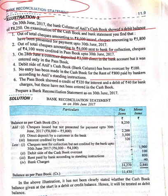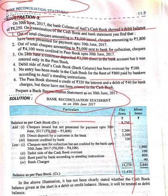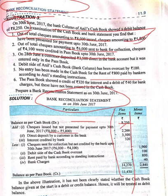Now we will write the Bank Reconciliation Statement as on 30th June 2017. The format has plus items and minus items. First, balance as per cash book: 8,250. Cheques issued but not presented for payment: 8,000 minus 5,800 equals 2,200. Directly deposited by a customer in the bank: 3,500. Interest credited by bank: 320.